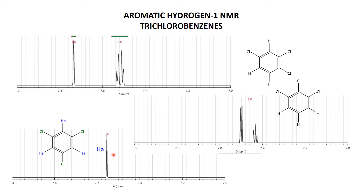Now I'd work up in symmetry and go for the 1,2,3-trichlorobenzene. There are three hydrogens. How many are equivalent? The one in the middle is unique, but the two flanking ones are equivalent to each other — so two different proton types: HA, HA, and HB. Now let's think about splitting. HA has got one adjacent proton.